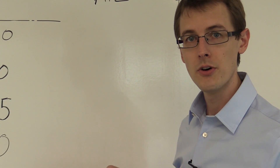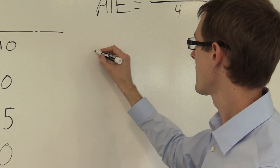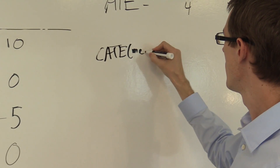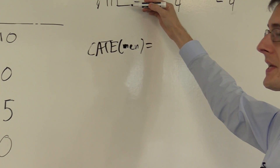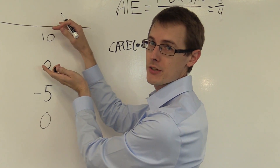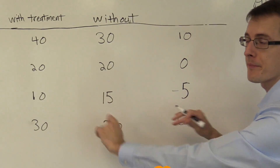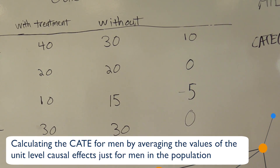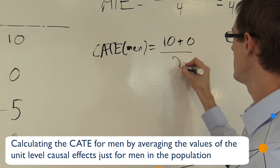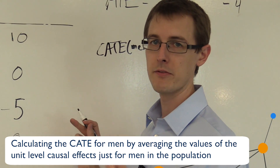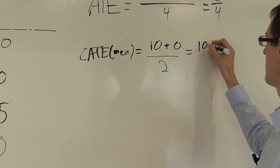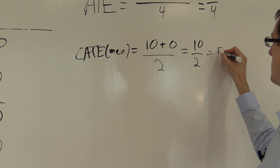Now let's look at the conditional average treatment effect for men. This is the same as the average treatment effect, but only looking at the men in the population — we throw out the women. So that's (10 + 0) / 2, which equals 10/2, or 5.